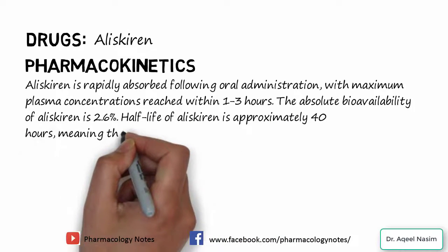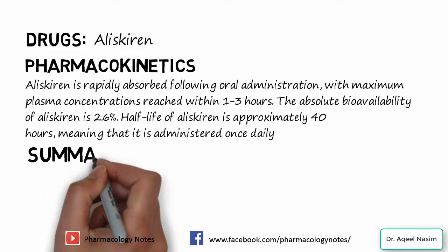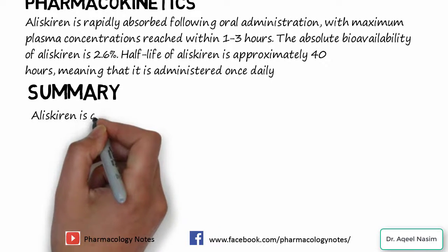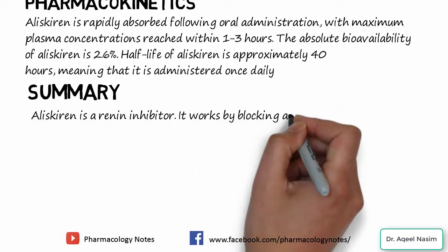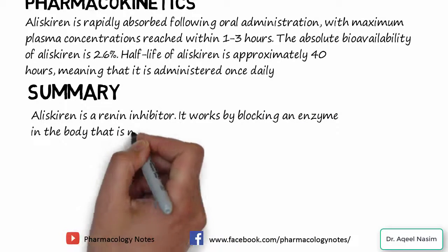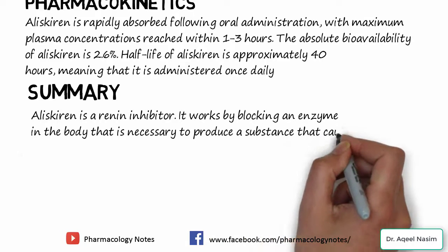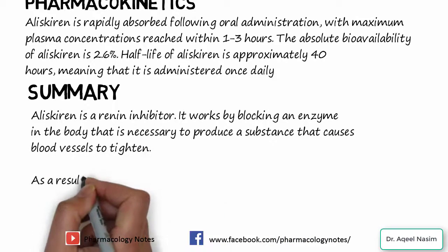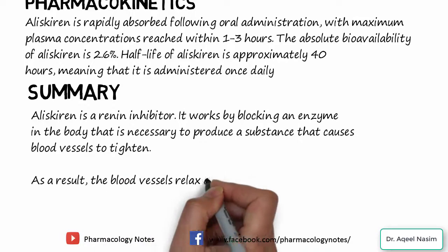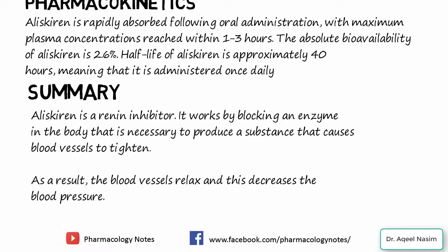In summary, aliskiren is a renin inhibitor. It works by blocking an enzyme in the body that is necessary to produce a substance that causes blood vessels to tighten. As a result, the blood vessels relax and blood pressure decreases. This concludes the pharmacology of direct renin inhibitors.